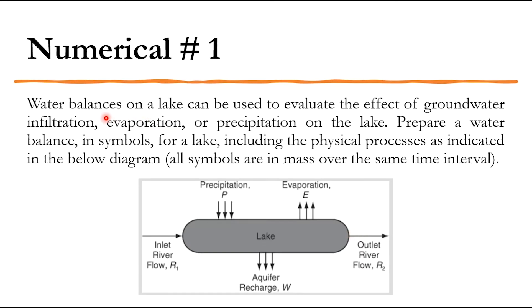Numerical number one: a water balance on a lake can be used to evaluate the effect of groundwater infiltration, evaporation, or precipitation. Prepare a water balance in symbols for a lake, including the physical processes as indicated in the diagram. All symbols are in mass over the same time interval. The lake has two inlets — inlet river water R1 and precipitation P — and three outlets: evaporation E, outlet river flow R2, and aquifer recharge W.